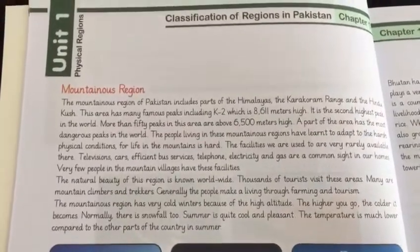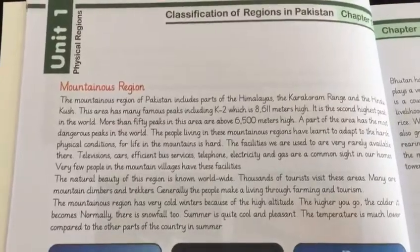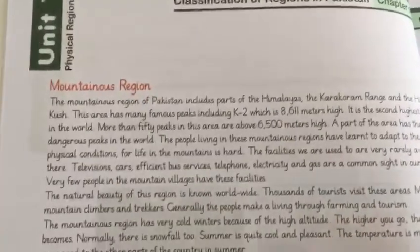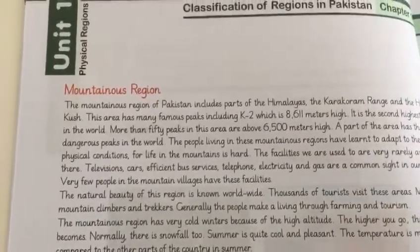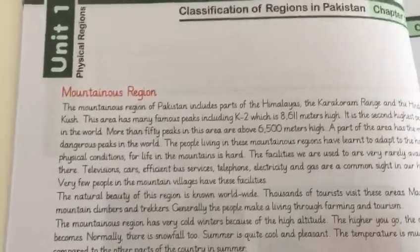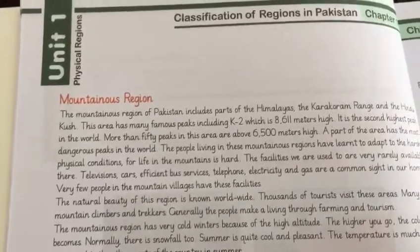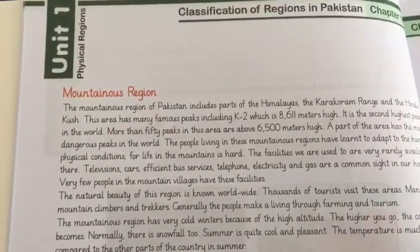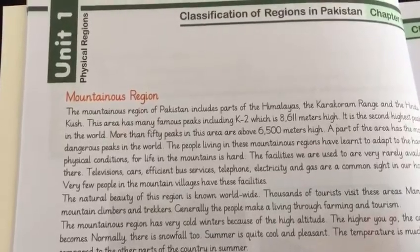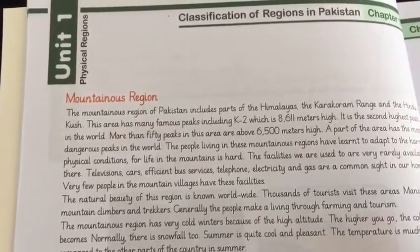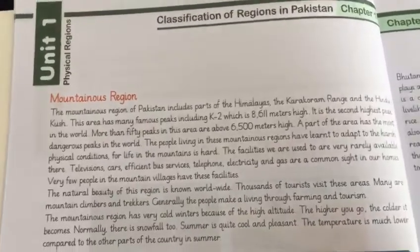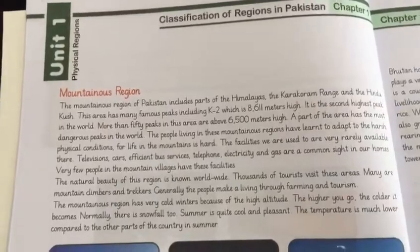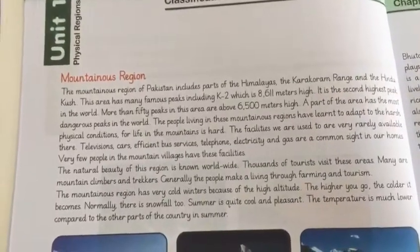More than 50 peaks in this area are above 6,500 meters high. The Himalayas, Karakoram, and Hindu Kush ranges all contain mountains above 6,500 meters. Part of this area has some of the most dangerous peaks in the world.